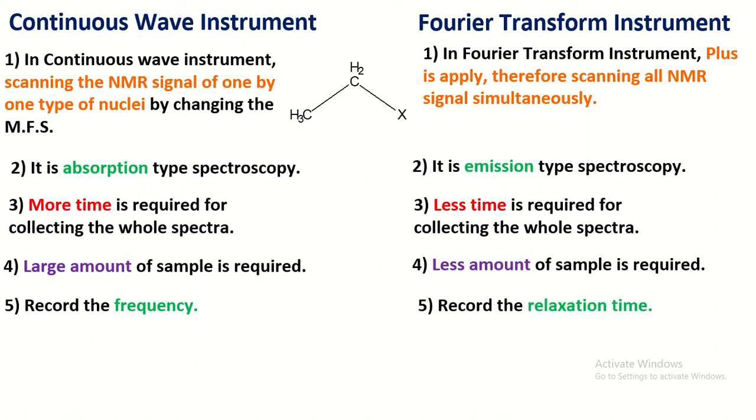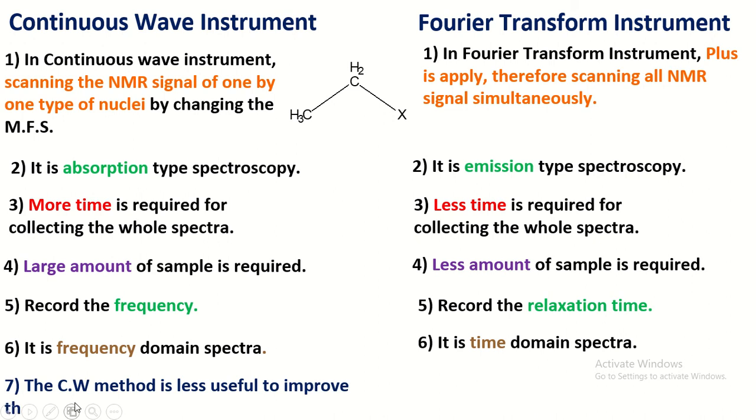But record the relaxation time by using Fourier transform instrument. Therefore, spectra obtained from the continuous wave instrument is called frequency domain spectra. And spectra obtained from Fourier transform instrument is called time domain spectra.